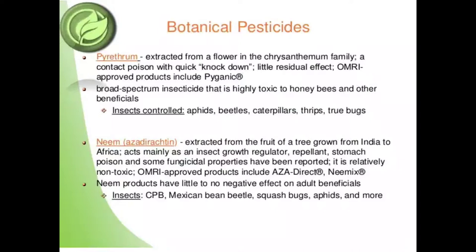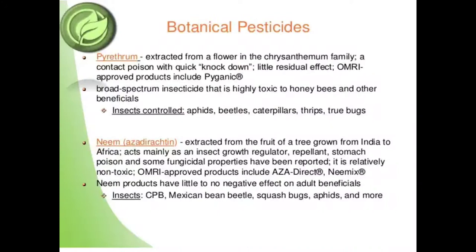Some botanical pesticides are also discussed. Pyrethrum is extracted from flowers of the chrysanthemum family. It is a contact poison with quick knockdown and lethal residue effect. OMRI-approved products include Pyganic. It is a broad-spectrum insecticide that is highly toxic to honeybees and other beneficial insects. Insects controlled by pyrethrum include aphids, beetles, caterpillars, thrips and true bugs.